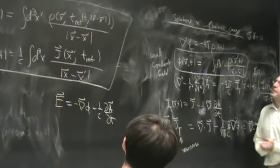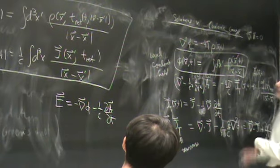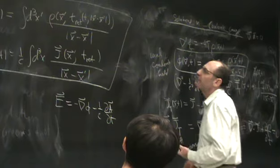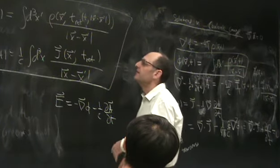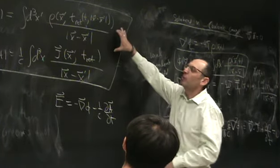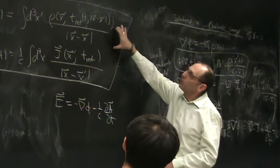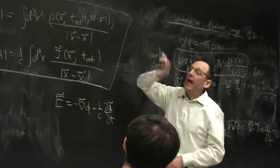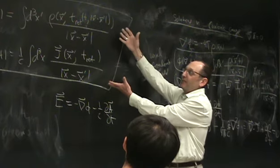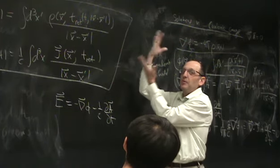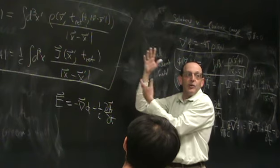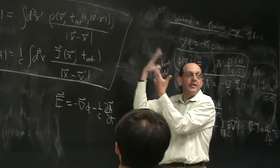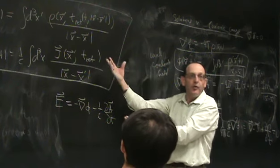To summarize: it doesn't matter which gauge you use — the physical fields are the same at the end of the day. It's sometimes easier to work with the Lorentz gauge, and that's what we'll do going forward. We have the formal solution, and just as in the static case where we looked for multipole expansions, we're now going to look at multipole radiation: electric dipole radiation and magnetic dipole radiation.